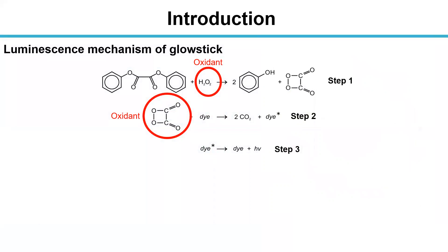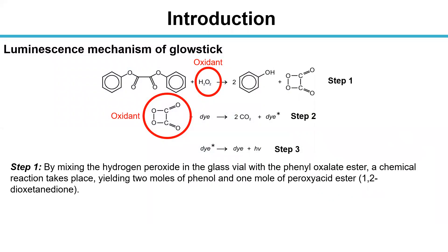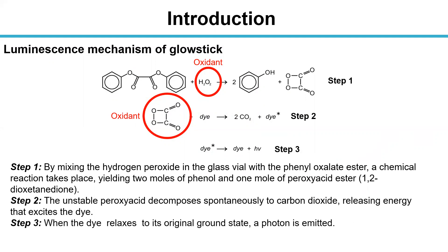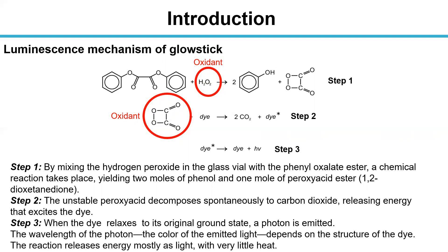Next is the luminescence mechanism of glow sticks. By mixing hydrogen peroxide in a glass vial with a phenyl oxalate ester, a chemical reaction takes place, yielding two moles of phenol and one mole of peroxy acid ester. The unstable peroxy acid decomposes spontaneously to carbon dioxide, releasing energy to excite the dye. When the excited dye relaxes to its original ground state, a photon is emitted. The wavelength of the photon determines the color of emitted light, which depends on the structure of the dye. The reaction releases energy mostly as light with very little heat.